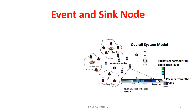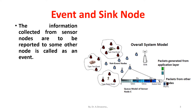Event and Sync Node Definition: The information collected from sensor nodes, or to be reported to some other node, is called an event. A node which collects events is called a Sync Node.